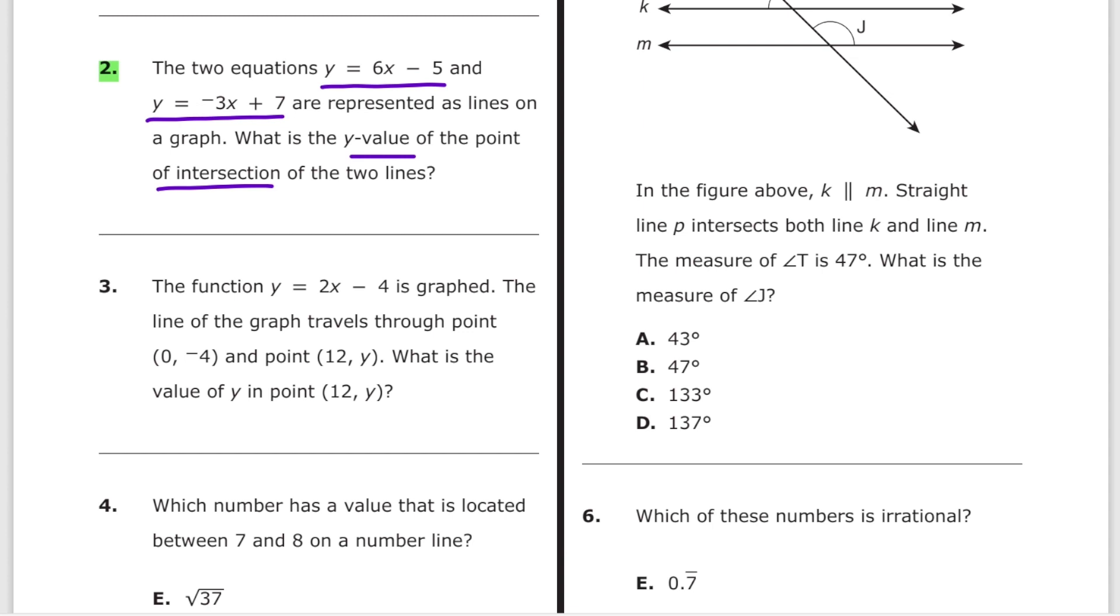All you have to do is set these two equations equal to each other. 6x minus 5 equals negative 3x plus 7. So move the 3x, plus 3x plus 3x. You get 9x minus 5 equals 7. Move the 5 to the other side. Shortcut here. So 9x equals 12 and x therefore equals 12 over 9 or 4 thirds.